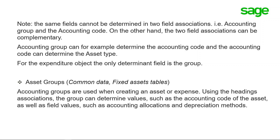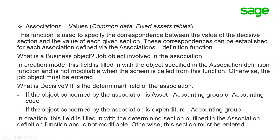The determined field for the group is the Asset Groups function, located under Common Data > Fixed Assets > Tables. Accounting groups are used when creating an asset or expense. Using the headings associations, the group can determine values such as the accounting code of the asset, as well as field values such as accounting allocations and depreciation methods.